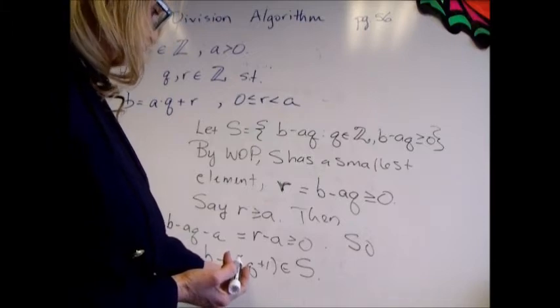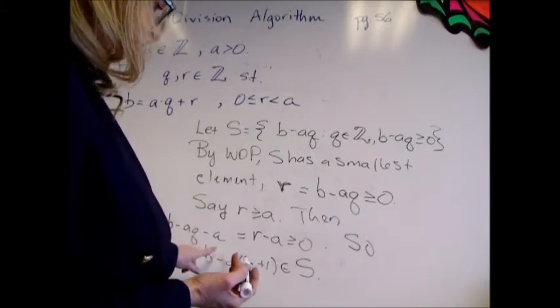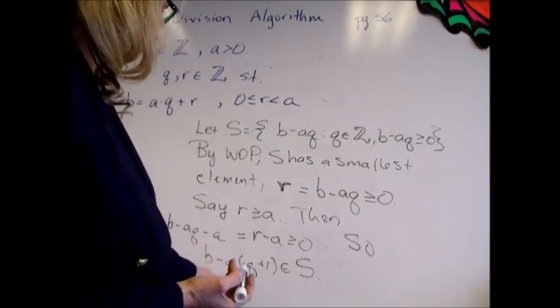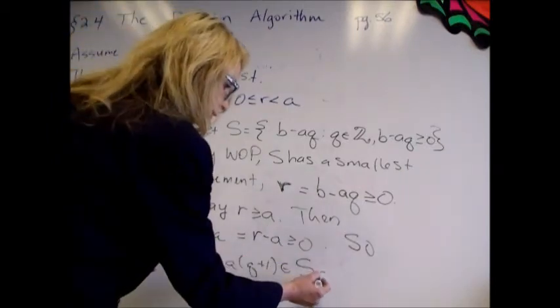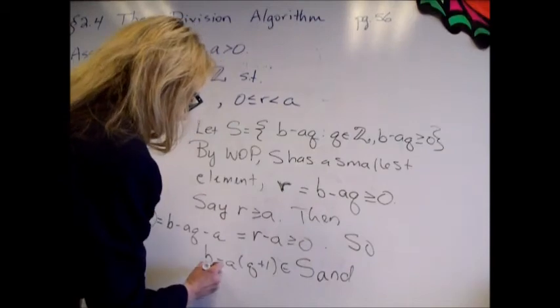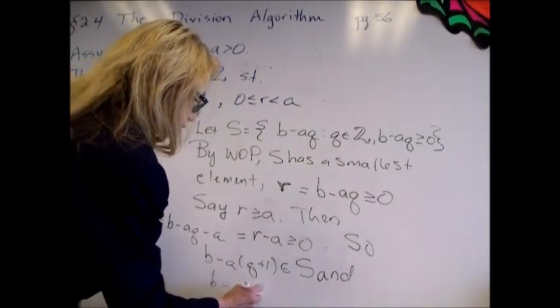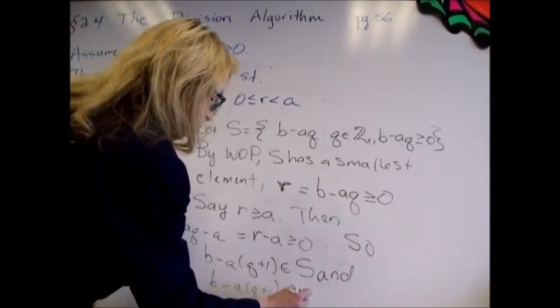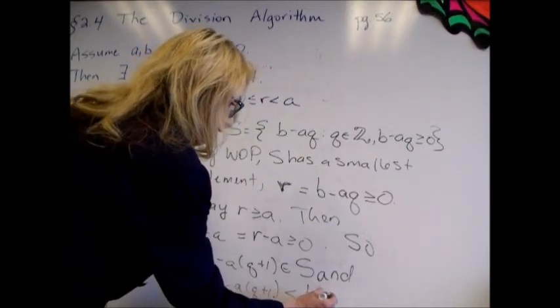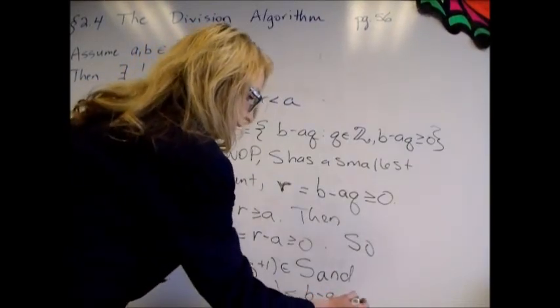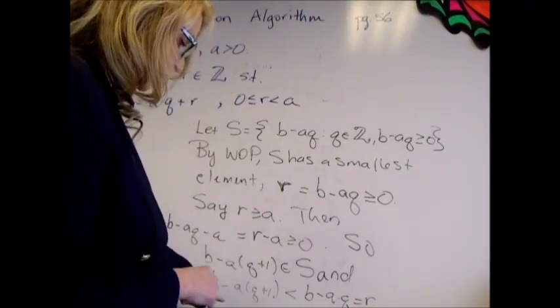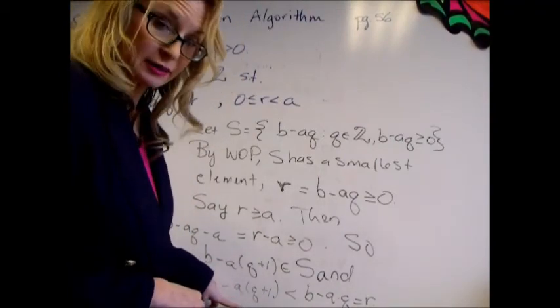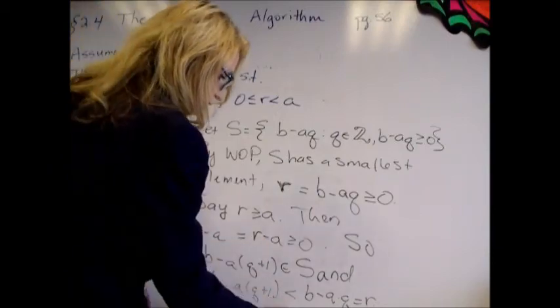But notice that that is smaller than r. This is in S, and B minus A times Q plus 1 is smaller than B minus A times Q, but that's r. R was supposed to be the smallest element of S. Here we have a non-negative element of S smaller than r. That's a contradiction. It can't happen.